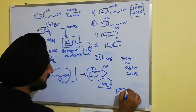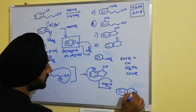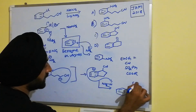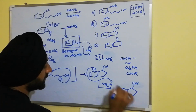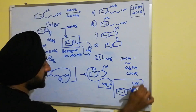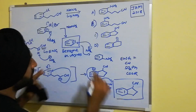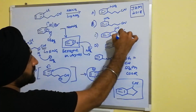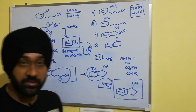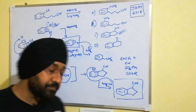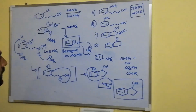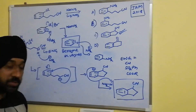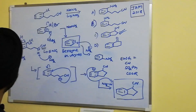This leads to formation of a species which then abstracts a proton from ammonia, giving the final product. Looking at the options given, it is option C which corresponds to the correct product.